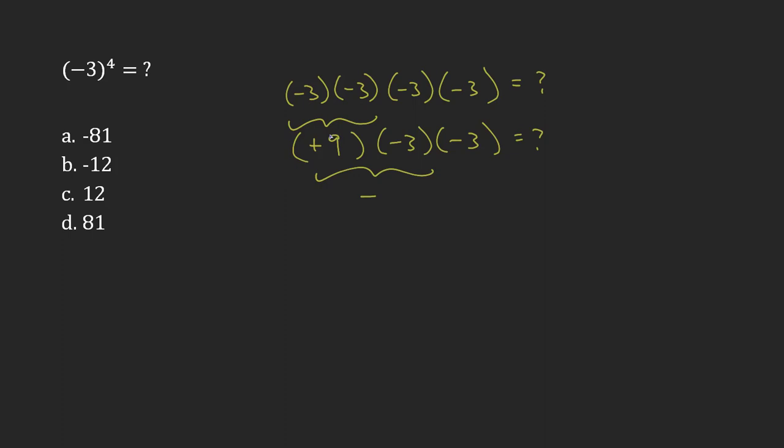And then I'm dealing with 9 times 3, which is 27. And that still has to be multiplied by the remaining negative 3. Now I'm dealing with negative times a negative, which is a positive.